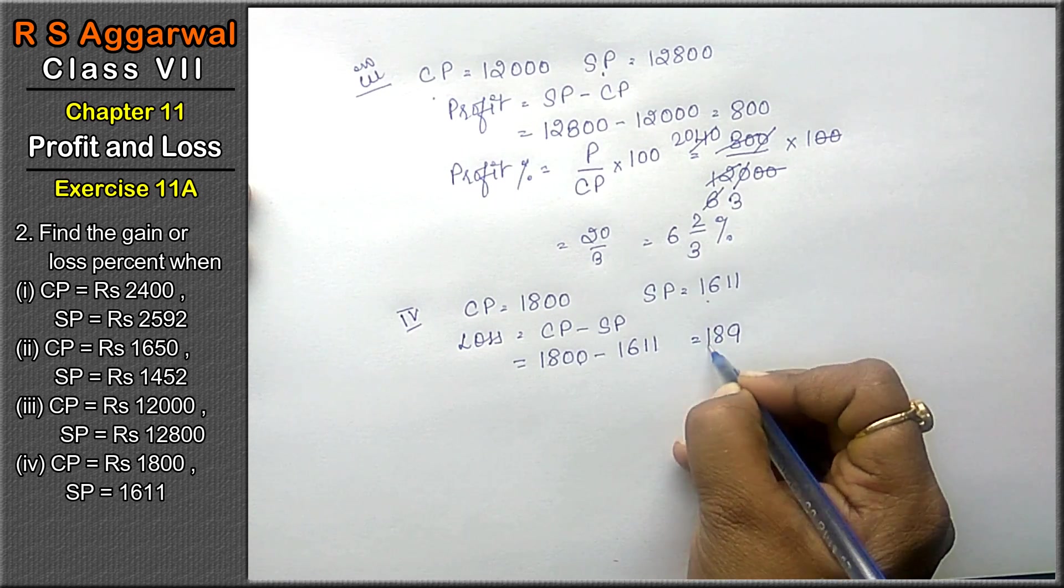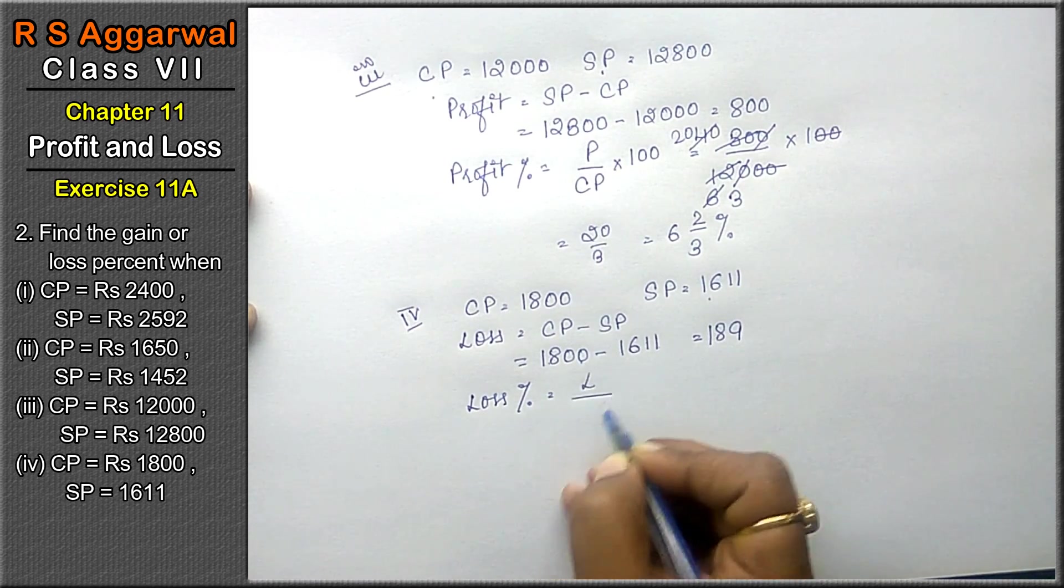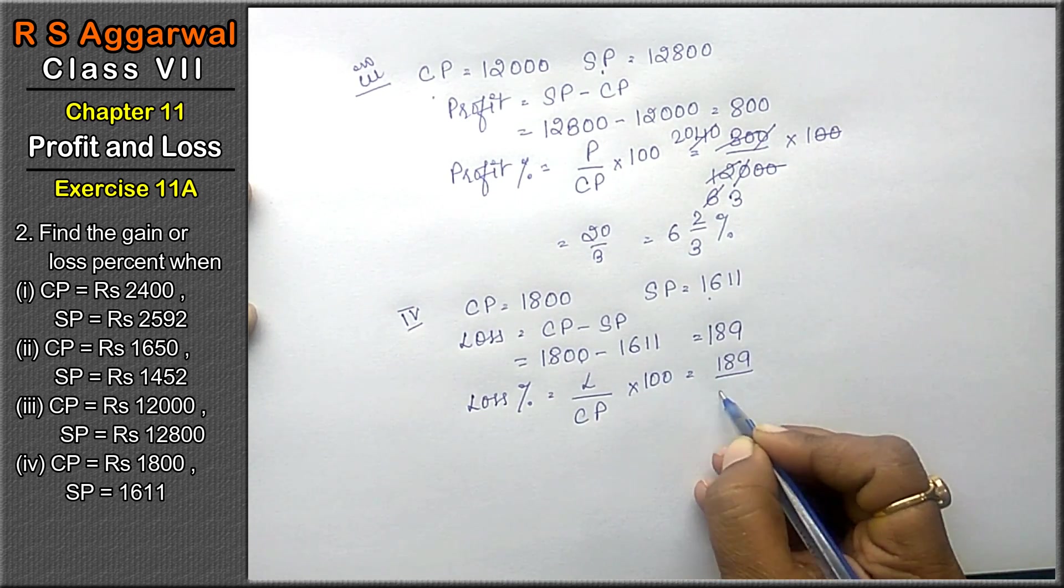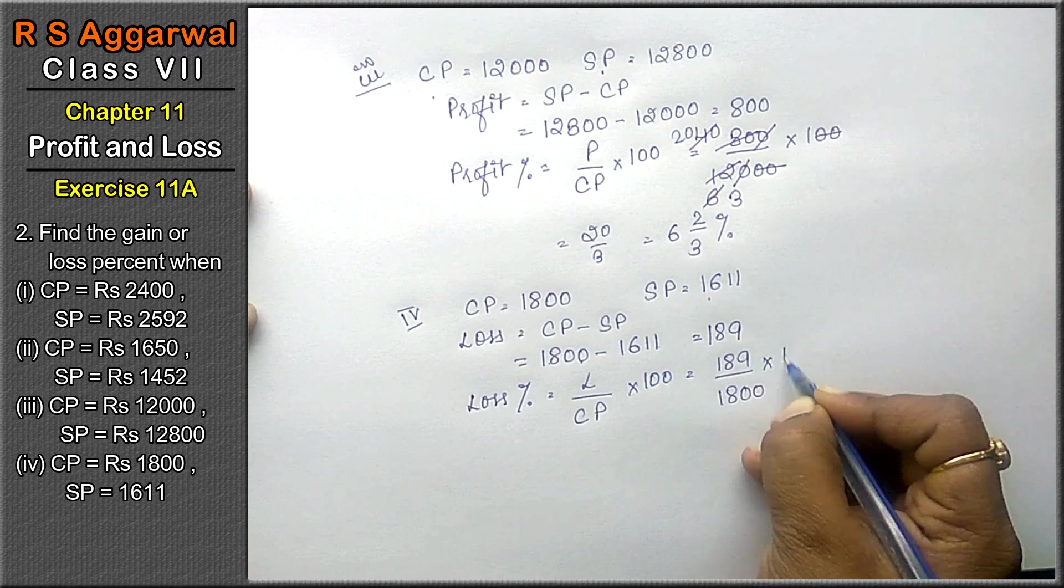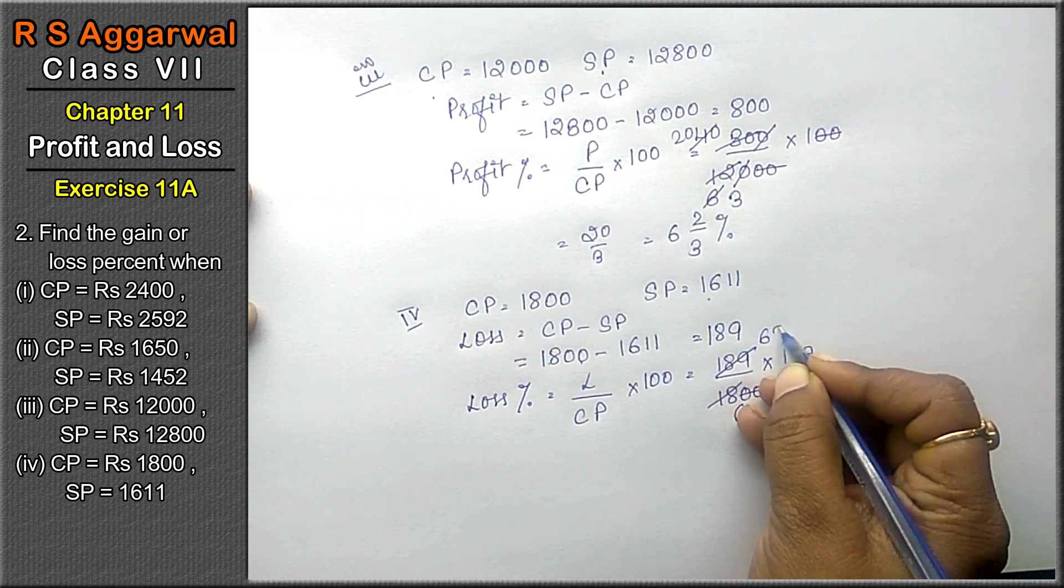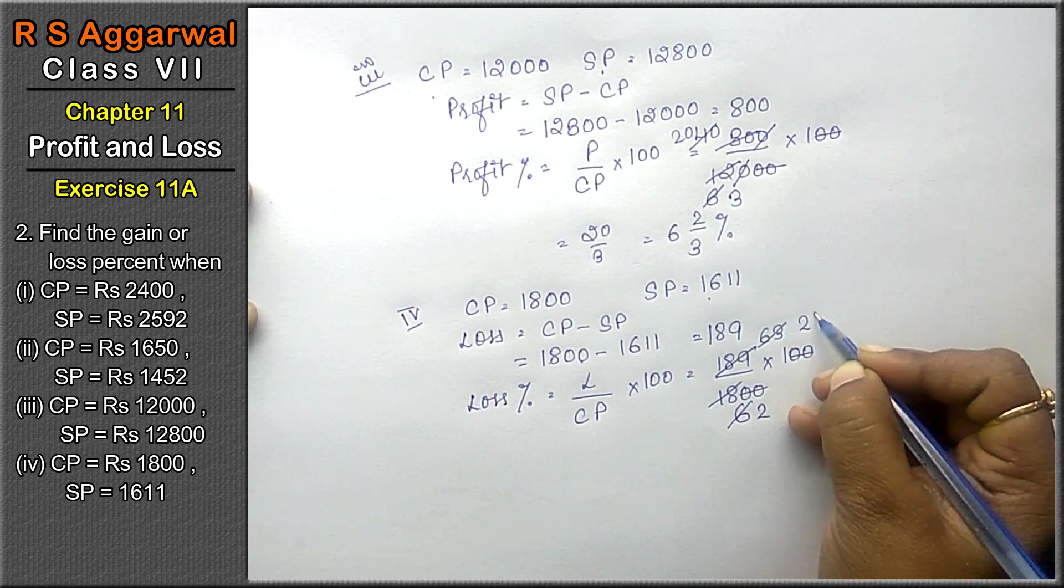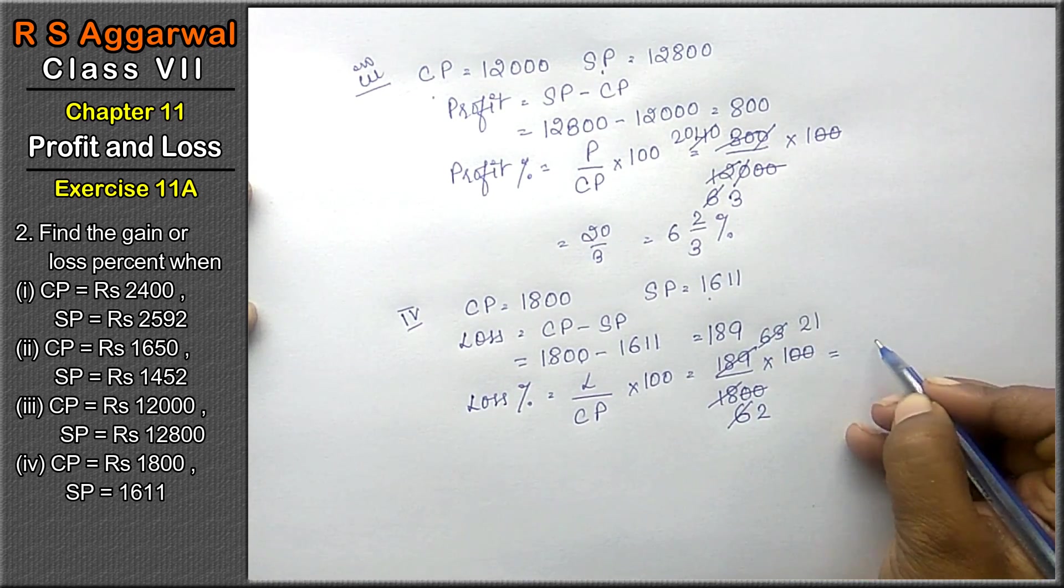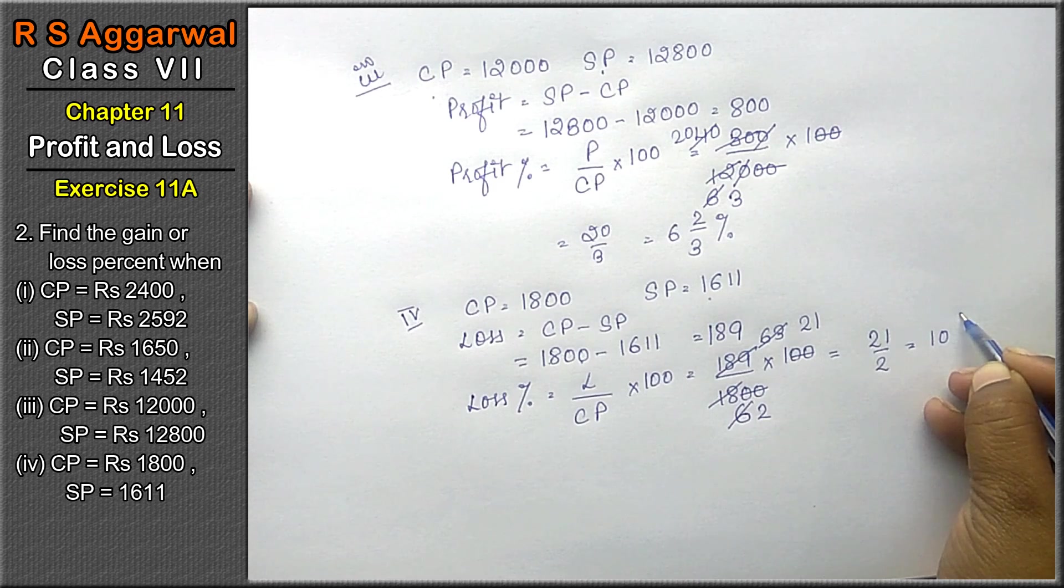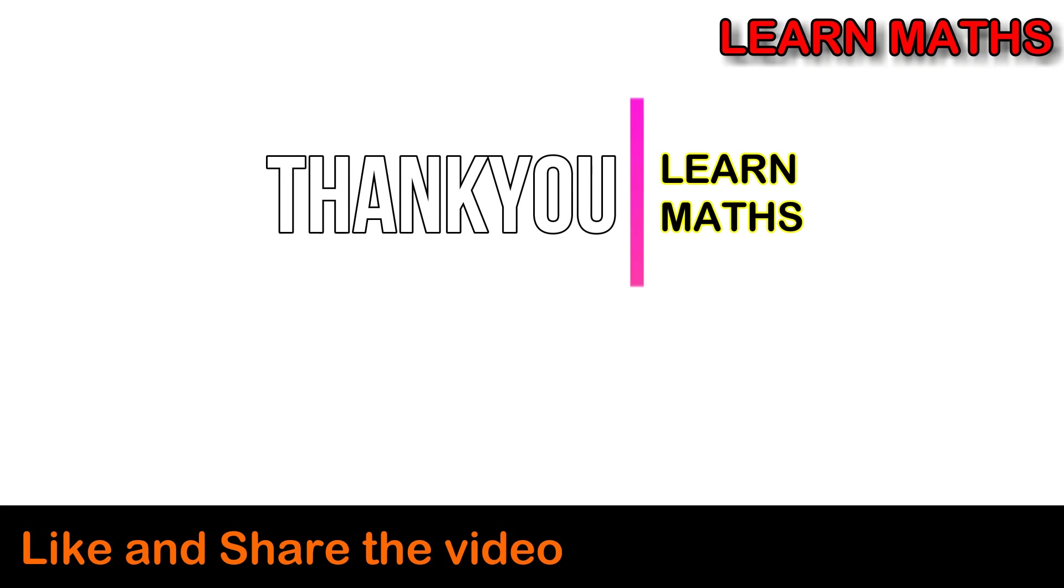Now loss percent equals to loss upon CP into 100. Loss is 189, CP was 1800, into 100. Canceling zeros: 189 upon 18. Dividing gives 21 upon 2, which is 10½ percent. Loss percent is 21 upon 2 percent or 10½ percent.